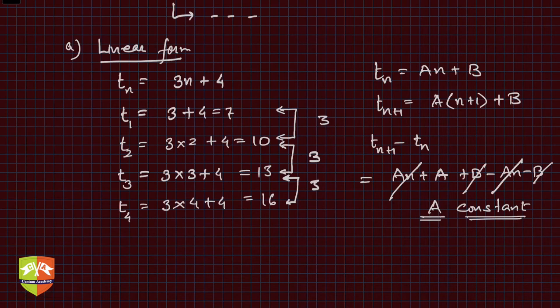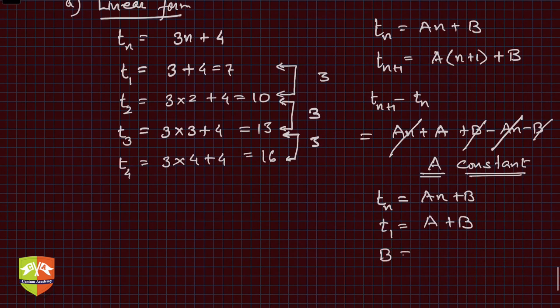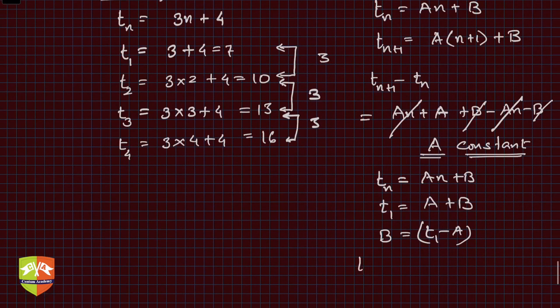We can find b also. Since tn = an + b, t1 will equal a + b. So b is t1 - a. The new relationship could be tn = a(n) + (t1 - a), or tn = an + (t1 - a). This is also a linear form.